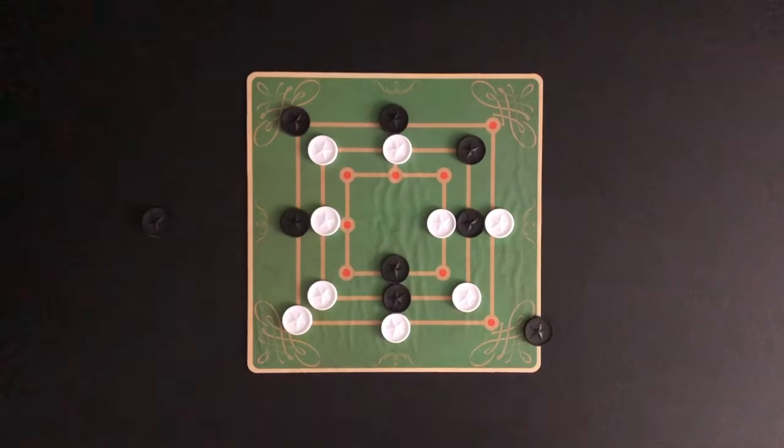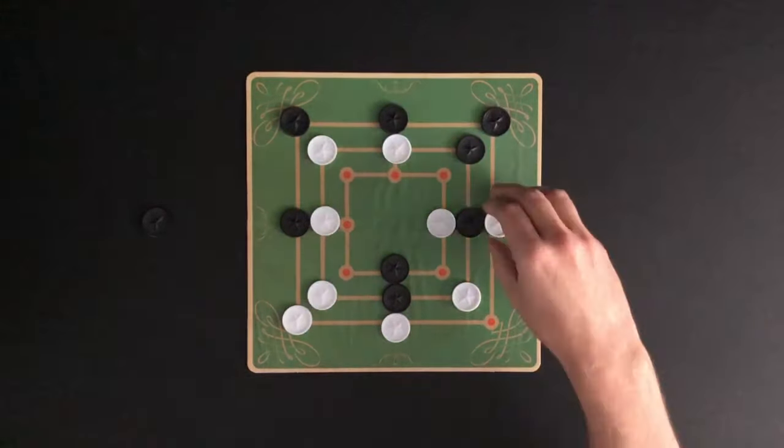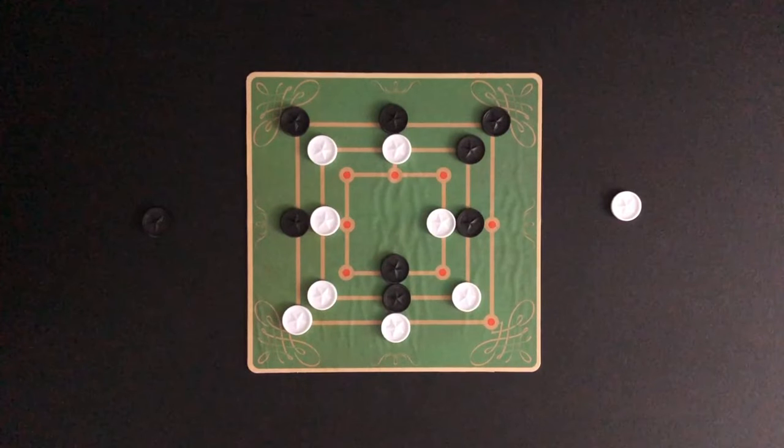Black places their last marker and gets three in a row. Black will remove one of white's markers that isn't part of a three in a row.